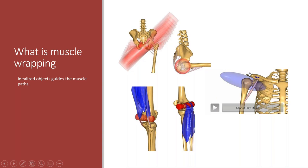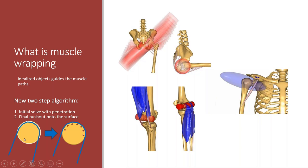There are spheres that guide the gluteus maximus muscle fibers so that you get smooth muscle paths as the hip bends. There's also a lot of wrapping surfaces in the shoulder. The new muscle wrapping algorithm in AnyBody is basically a two-step algorithm: it first solves the muscle path, allowing the muscle fiber to penetrate these objects a little bit, and then pushes the muscle fibers out onto the surface.